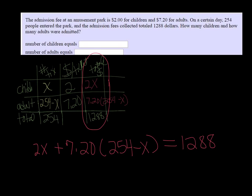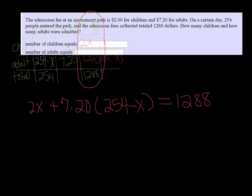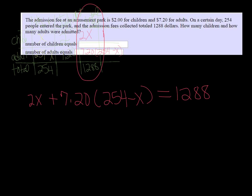So we just need to solve this equation, and we will be on our way. Okay, so I'm going to distribute. I have 2X and then 7.2 times 254, my calculator tells me is 1828.8.